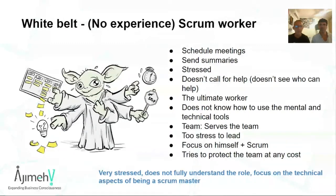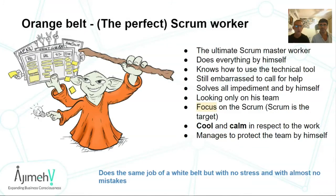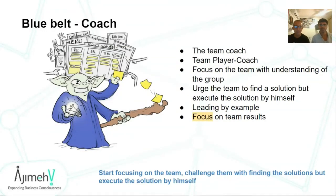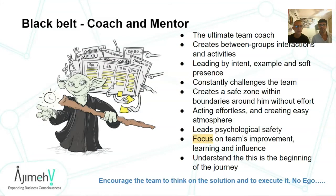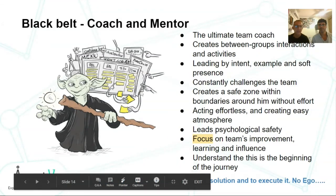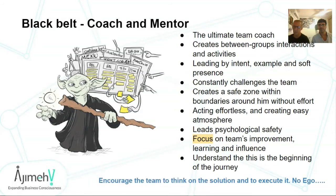Let's recap the levels: white belt — can cope with all tasks, focusing on itself. Orange belt — managing to cope with all tasks, still by itself. Blue belt — starting to ask the team to deal with tasks, guarding them; if something falls, the Scrum Master helps. Black belt — doesn't really need to do anything technically, only mentally, because if something falls the team knows how to catch it. The Scrum Master is focusing on being a coach.